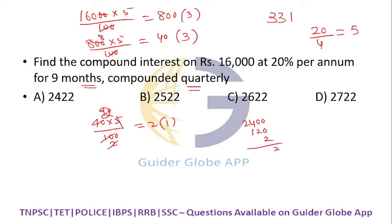That is 2522. This is the answer. The shortcut formula for calculating compound interest, this is the shortcut 331. We have another one, 225, 1422.